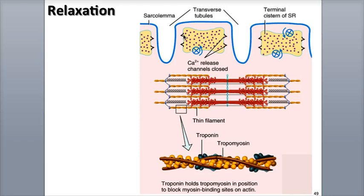The calcium ion release channels, shown in black, close once the last muscle action potential has moved through the T-tubules. Calcium ions are pumped back into the SR, and the calcium ion concentration in the sarcoplasm begins to decrease. As calcium ions move into the SR, a calcium binding protein called calsequestrin attaches to calcium ions, encouraging more of the ions to be stored or sequestered inside the SR. Now the calcium ion concentration in the SR is 10,000 times higher than the sarcoplasm of a relaxed muscle fiber. As the calcium ion concentration decreases, tropomyosin swivels back around actin, blocking the myosin binding sites, causing the muscle fiber to relax.